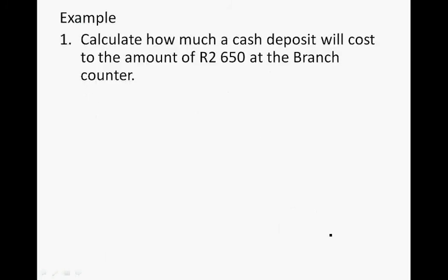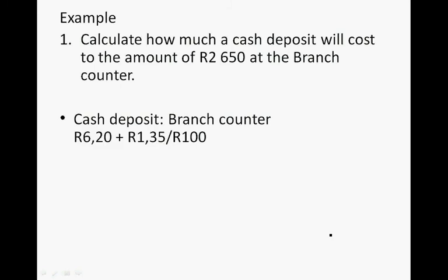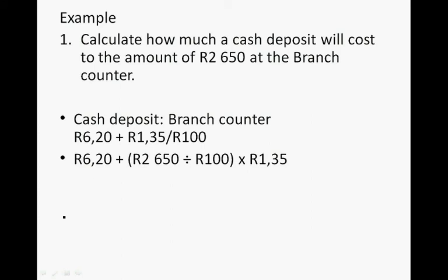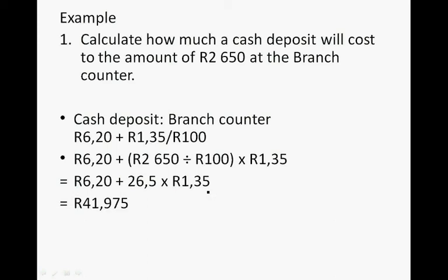Question 1: Calculate how much a cash deposit will cost for R2,650 at the branch counter. The formula is R6.20 plus R1.35 for every R100. So it's R6.20 plus (R2,650 ÷ 100) × R1.35, which gives R41.975, rounded to R41.98.